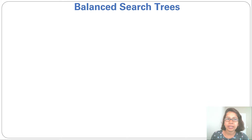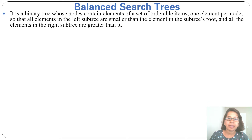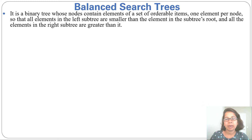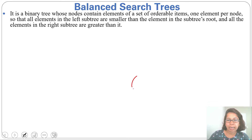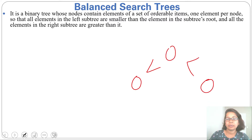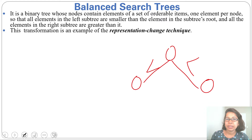Next, I will discuss Balanced Search Tree. A Balanced Search Tree is a binary tree whose nodes contain elements of a set of orderable items — orderable meaning alphabets or numbers — with one element per node, so that all elements in the left subtree are smaller than the element in the root, and all elements in the right subtree are greater than it. This transformation is an example of representation change.